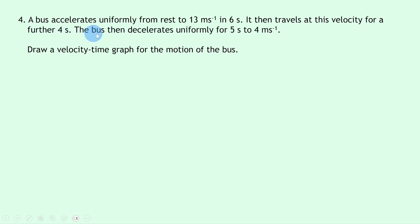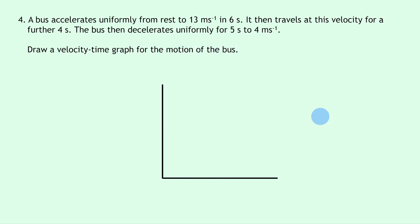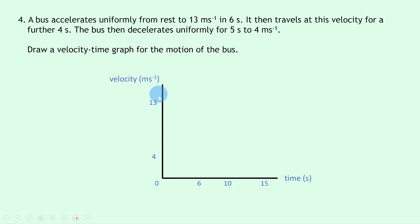Question four says a bus accelerates uniformly from rest to 13 meters per second in 6 seconds, then travels at this velocity for a further 4 seconds, then decelerates uniformly for 5 seconds to 4 meters per second — draw a velocity-time graph for the motion of the bus. There's a lot going on, so we need to include all parts. We set up our axes with velocity in meters per second and time in seconds, then label 4 and 13 meters per second on the y-axis, and 6 seconds on the x-axis.